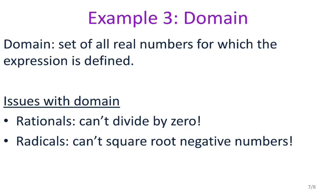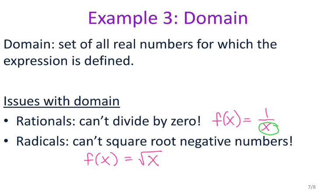The next thing we're going to look at is domain. The domain is the set of all real numbers for which the expression is defined. When talking about domain in terms of a function, it's your possible x values that actually work for the function. You have a couple of issues with domain: for rational expressions you can't divide by 0, and for radicals you can't take the square root of negative numbers. Those are imaginary — not real — so that puts limitations on what your x can be.